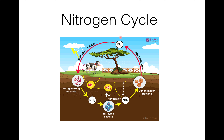To explain the whole cycle again: atmospheric nitrogen, with the help of nitrogen-fixing bacteria, is converted into ammonia (NH₃ or NH₄⁺). Ammonia is then converted into nitrite with the help of Nitrosomonas bacteria. Nitrite is then converted into nitrate with the help of Nitrobacter. Finally, nitrate is converted back to atmospheric nitrogen with the help of denitrifying bacteria.